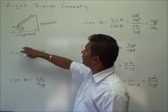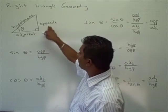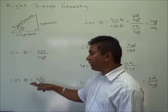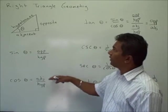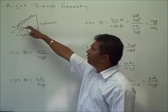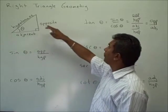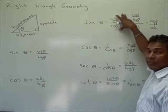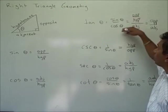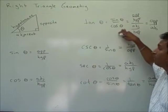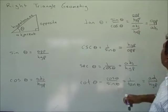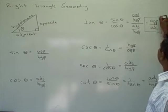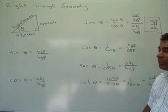The sine is defined as the opposite side divided by the hypotenuse. The cosine is defined as the adjacent side divided by the hypotenuse. Tangent theta is sine theta divided by cosine theta, which simplifies to give us the opposite over the adjacent.